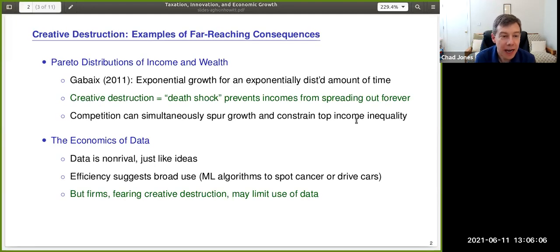Just to give two quick examples of these far-reaching consequences, one is the Pareto distribution for income and wealth. Pareto distributions arise when you have exponential growth that occurs for an exponentially distributed amount of time.